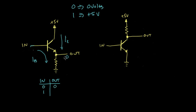Now let's look at the case where the input is 1, which means plus 5 volts. If the input is 1, we're going to have 5 volts and current flowing from our base to our emitter. Assuming there's enough current to get the transistor into saturation, current will flow unrestricted from plus 5 volts to ground. If we measure the voltage at our output between output and ground, the output is basically directly connected to plus 5 volts. So in this case, our output is going to be 1.